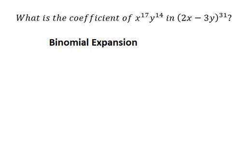In this situation, we can apply the formula. We have the summation k equals 0 to the highest power, which is 31, and we have combination 31 choose k.